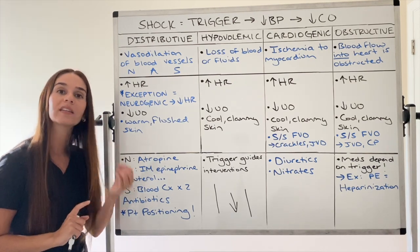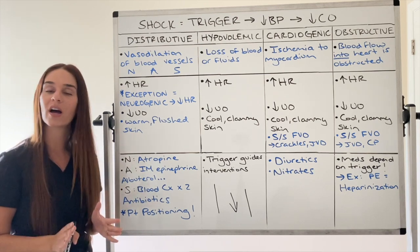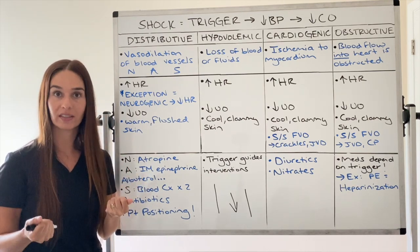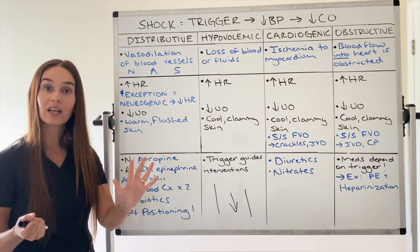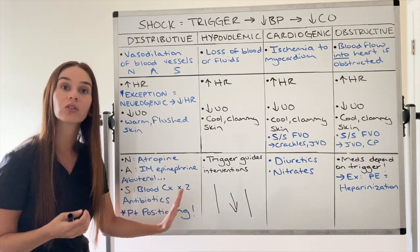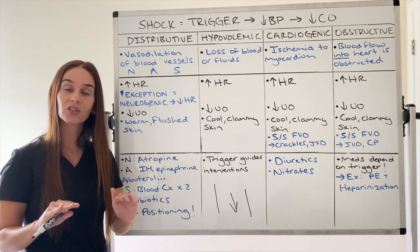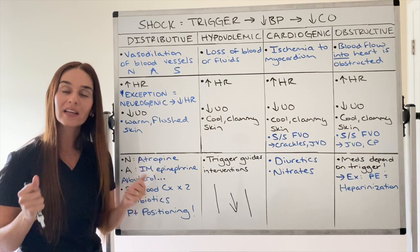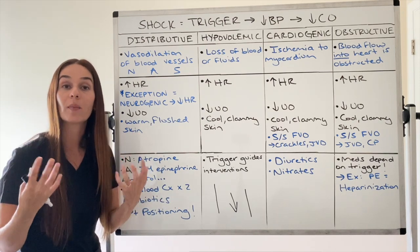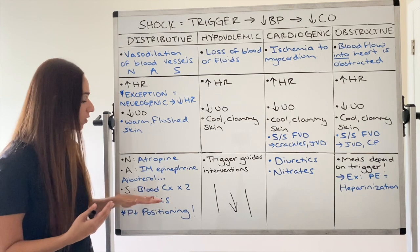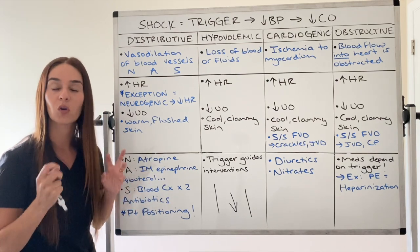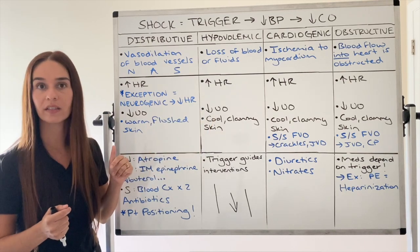With septic shock, we need to get an antibiotic in quickly — evidence-based practice says within one hour of the patient presenting with symptoms. We always obtain blood cultures times two prior to antibiotic administration so we know which organism we're treating. However, we no longer wait for culture results; we give broad-spectrum antibiotics immediately, as evidence shows better outcomes. You would not see that approach in other categories of shock.